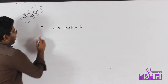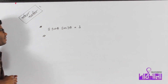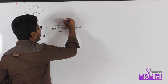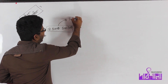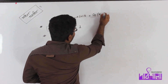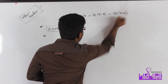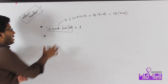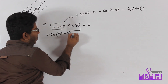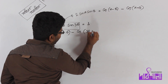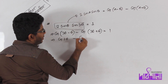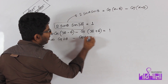Now we have 2 sin 3θ · sin θ equals 1. Using the product-to-sum formula: 2 sin A · sin B equals cos(A minus B) minus cos(A plus B). So 2 sin 3θ · sin θ gives cos(3θ minus θ) minus cos(3θ plus θ), which is cos 2θ minus cos 4θ equals 1.